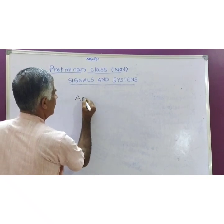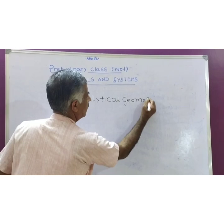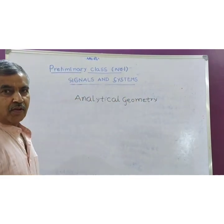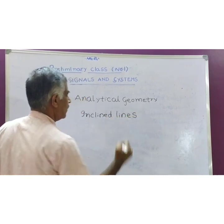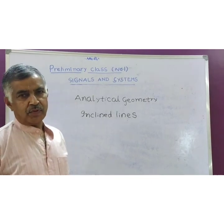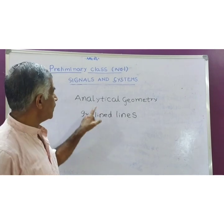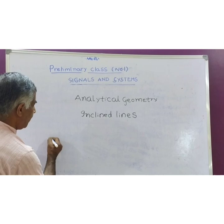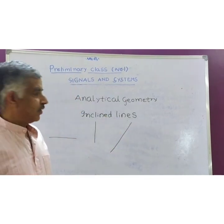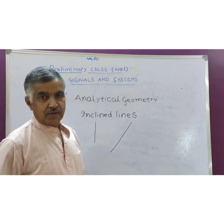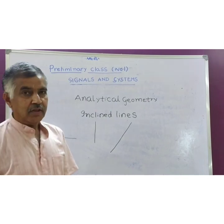Analytical geometry. Particularly, I will deal with inclined lines. Whenever you come across inclined lines, you are supposed to know what is its slope and what is its equation. There are a number of figures, and you should concentrate only on inclined lines. This is a horizontal line. This is a vertical line. This is an inclined line. I will go through inclined lines and their equations. When you become perfect with inclined line equations, you should not find the rest of the topics difficult.